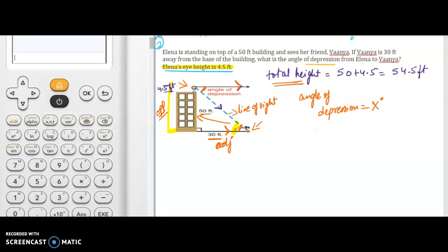Let's write the trig ratio because hypotenuse is not there. So hypotenuse is not there. I can use only tangent ratio. So tangent x degrees will be equal to opposite over adjacent and opposite is what? Total height. Total height is right there 54.5 feet divided by adjacent. Adjacent is 30 feet. We have the trig ratio. Now we have to take what? Inverse. So take inverse.